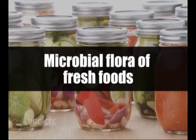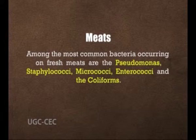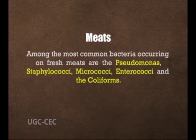The inner tissues of healthy plants and animals are free of microorganisms. However, the surface of raw vegetables and meats are contaminated by a number of microorganisms, so it is desirable to maintain a very low microbial level of contamination on raw foods. Among the most common bacteria that occur on fresh meat are Pseudomonas, Staphylococci, Micrococci, Enterococci and Coliforms.